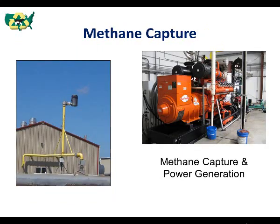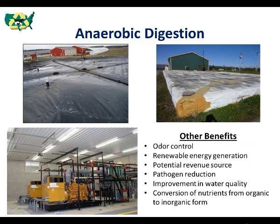Covered manure storage and methane capture is another good option for offsetting greenhouse gas emissions. Captured methane can either be flared — burned and converted to carbon dioxide, which is a less potent greenhouse gas — or used as a renewable energy source to run a generator to provide on-farm power. Like covered manure storage systems, anaerobic digesters provide a means to reduce methane emissions from animal manure and use it to generate power for on-farm and off-farm uses. There are several types and designs of anaerobic digesters that can be customized for different livestock and poultry operations and site-specific conditions.